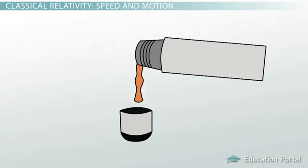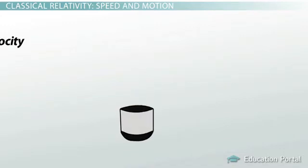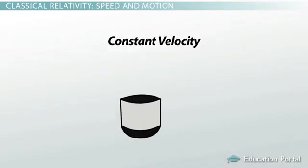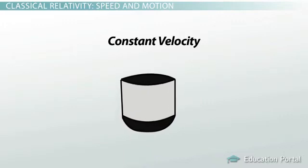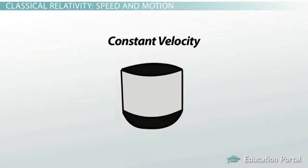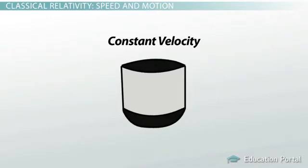Now this is possible because the car, you, the thermos, the coffee and your cup are all traveling at a constant velocity. From the perspective of you and your friend, the coffee is not moving and thus appears to have a velocity of zero miles per hour.